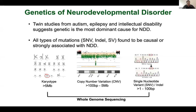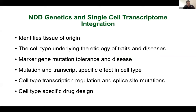The interesting thing about neurodevelopmental disorders, unlike other common complex diseases, is that you can sequence these patients and identify causal variants that are diagnosable. Molecular diagnostics can be provided from whole genome sequencing data. We want to integrate genetics with single-cell transcriptomics — we've been doing genetics for a long time and single cell has emerged over the last decade. We think merging these two will enrich the field, especially for disease outcomes.